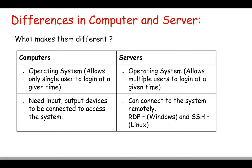For a computer you need local input/output devices, but servers are accessed remotely using RDP (Remote Desktop Protocol) for Windows or SSH for Linux. This is how cloud engineers and administrators access servers from the office level. That is the main difference between a computer and a server.